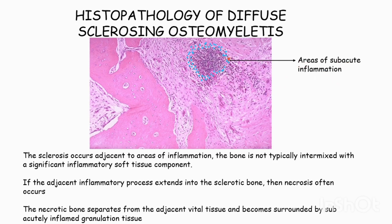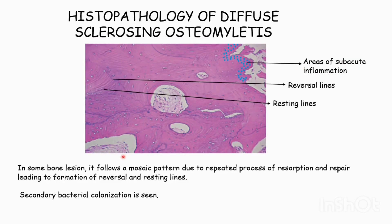In some bone lesions, it follows a mosaic pattern due to the repeated process of resorption and repair, leading to the formation of reversal lines and resting lines. Secondary bacterial colonization is also seen.